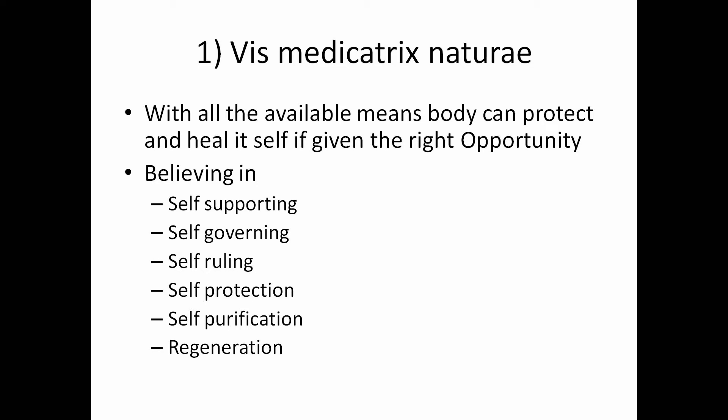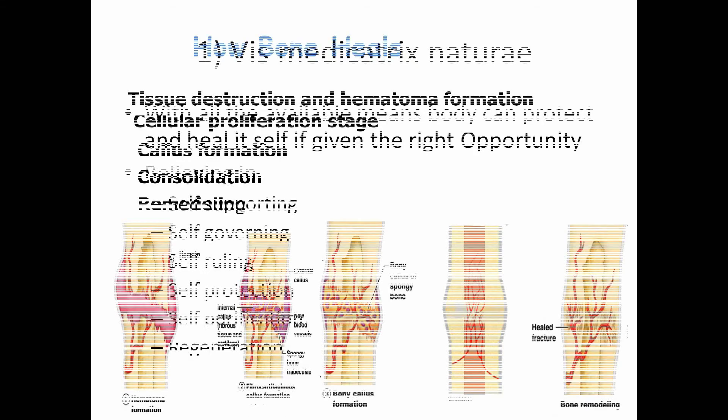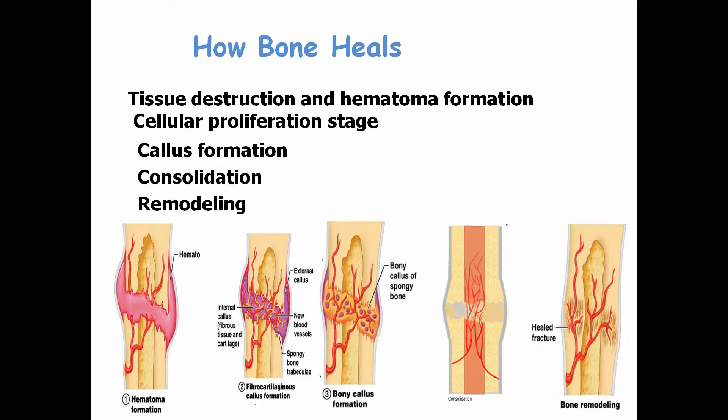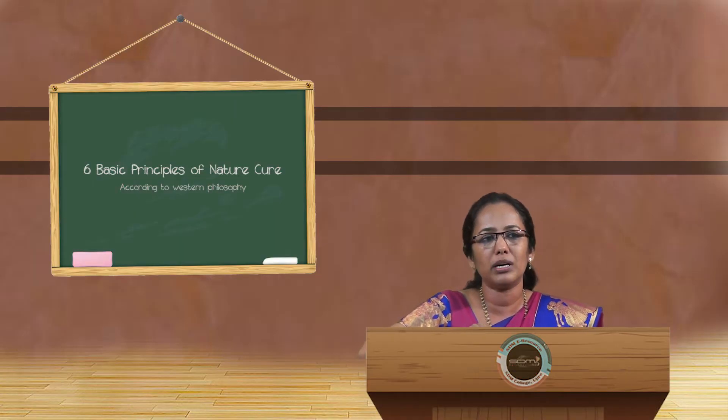Vis Medicatrix Naturae means that with all available means the body can protect and heal itself if we give it the opportunity. This philosophy believes in the self-supporting, self-governing, self-ruling, self-protecting, self-purificatory, self-regulating, and self-regenerative abilities of the body. For example, consider how a bone fracture heals — when there is a fracture in the clavicular bone, doctors typically just support the hand with a sling and leave it.